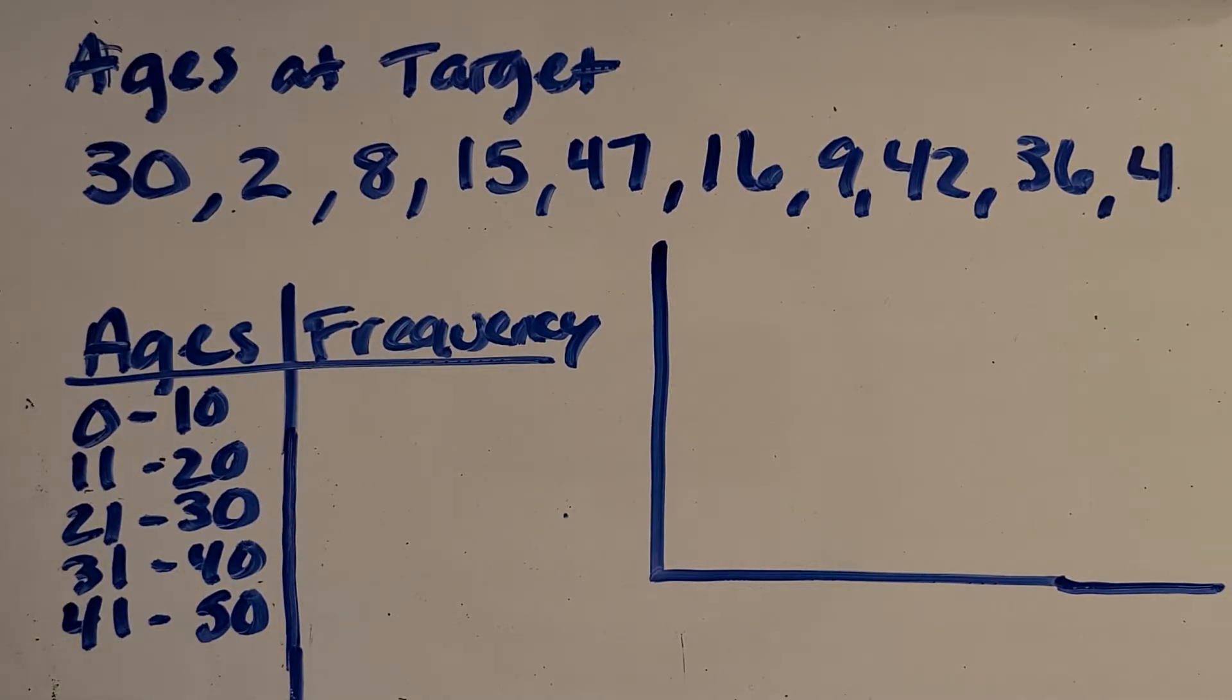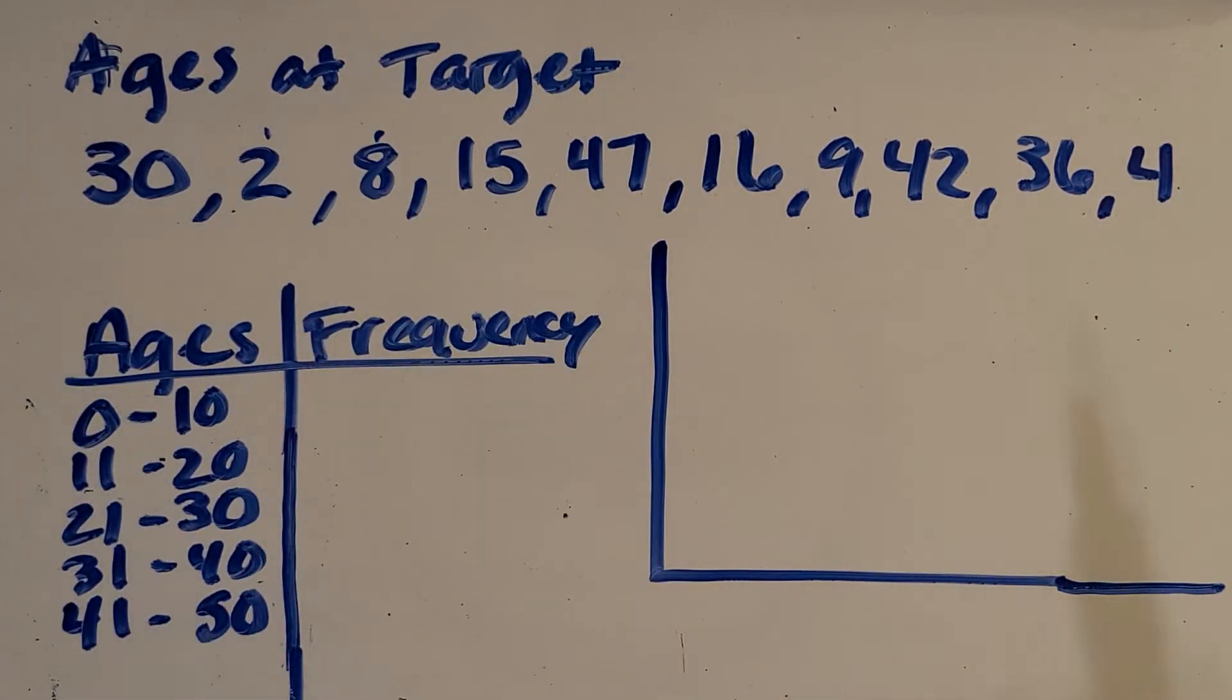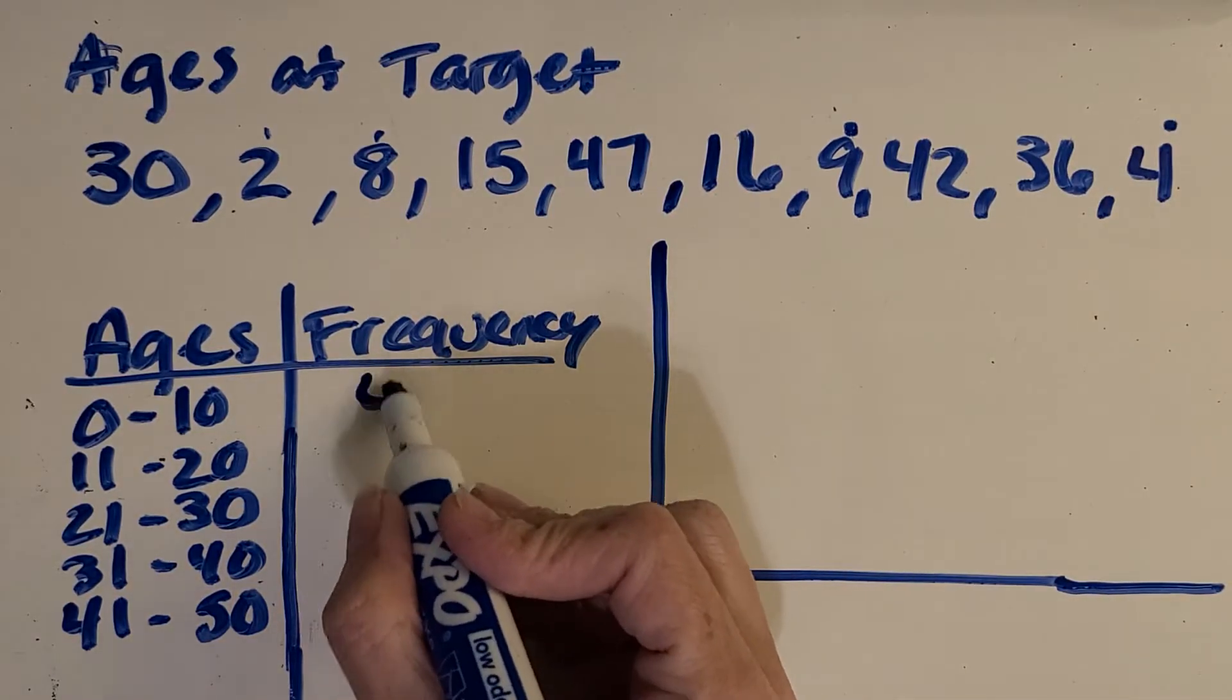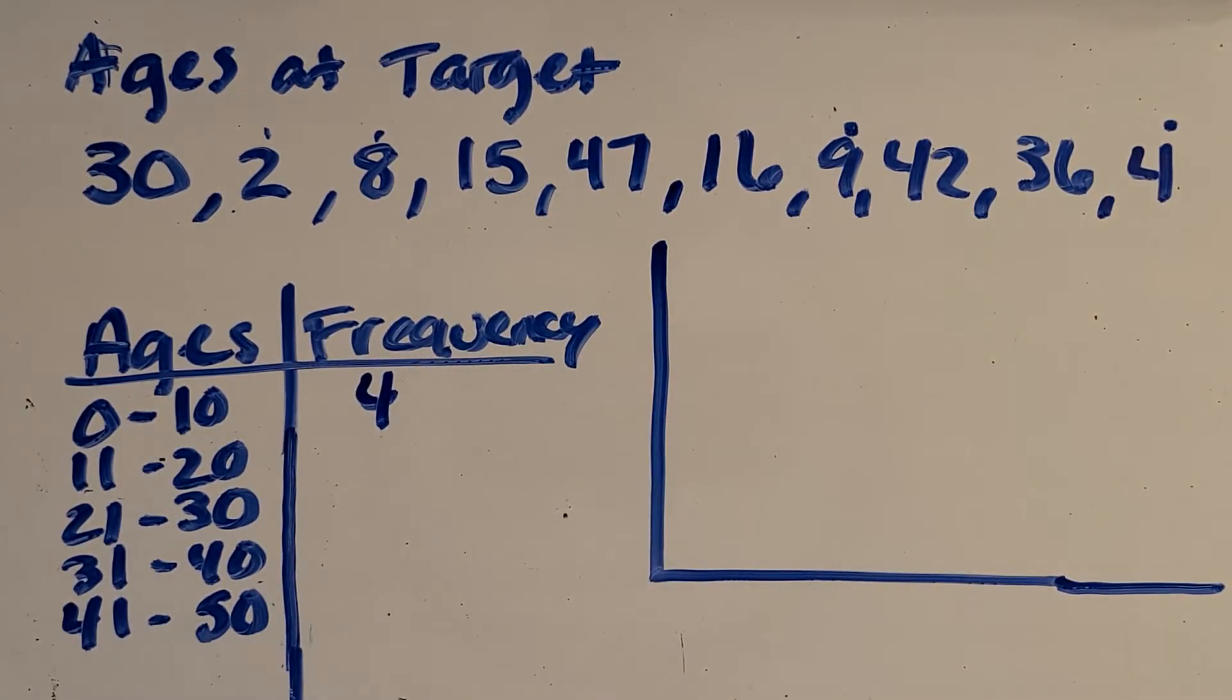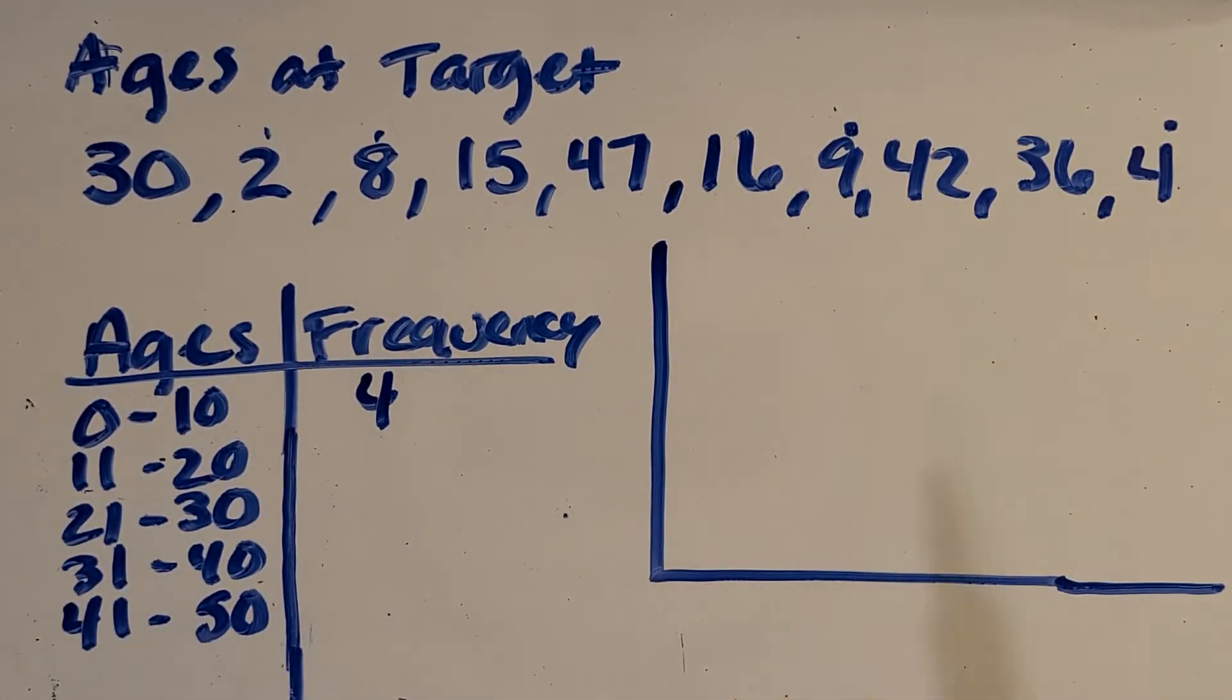Then I just need to look through my data. So how many people are in the 0 to 10 range? I see 1, 2, 3, 4. So that frequency is 4. Let's look at the 11 to 20. Notice how I'm marking things as I go so I don't miss something.